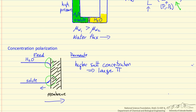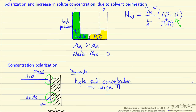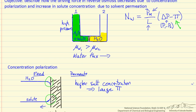Which means if we were to calculate the flux, we're not going to get the value from this equation if we use as our osmotic pressure what corresponds to the bulk concentration out here. Instead, it now corresponds to what's right at this surface.